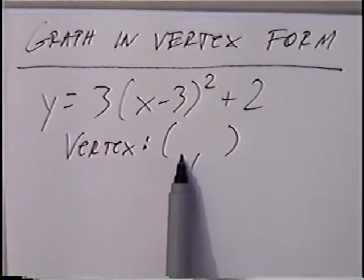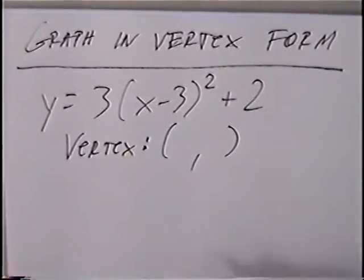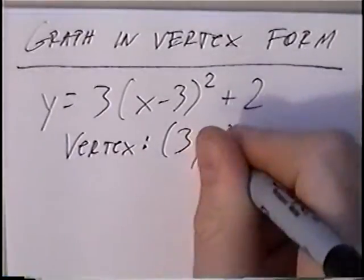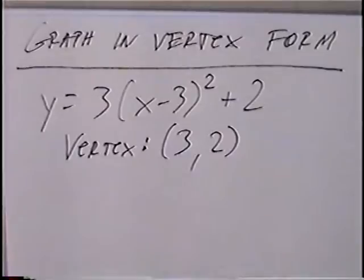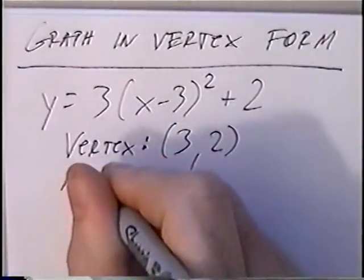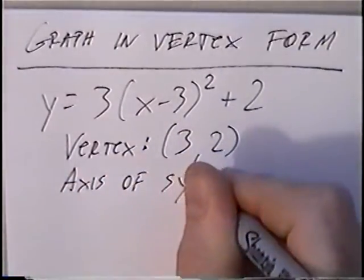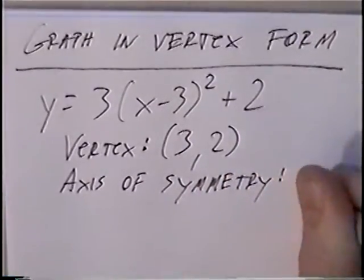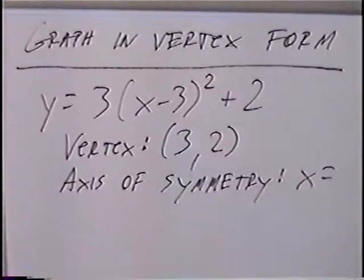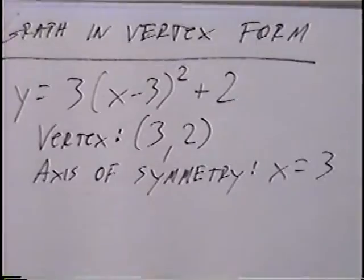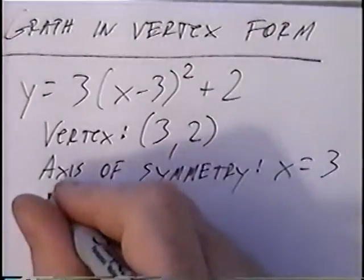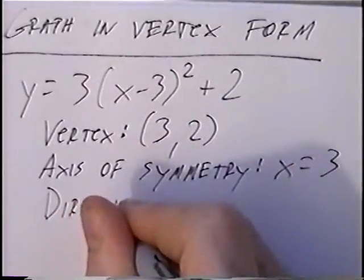For the vertex (x, y): looking inside the parentheses, the number after the minus sign will be the x-value. You can also take the opposite — if it's x minus 3, x would be positive 3. The y-value k, the last number positive 2, stays the same. So the vertex would be (3, 2). The axis of symmetry — the line down the middle of the graph that makes it symmetrical — is x equals positive 3.